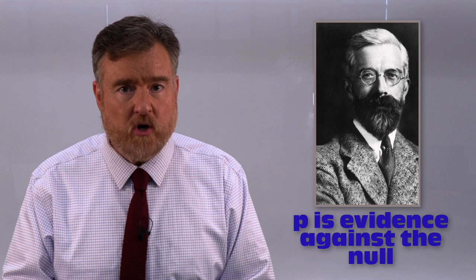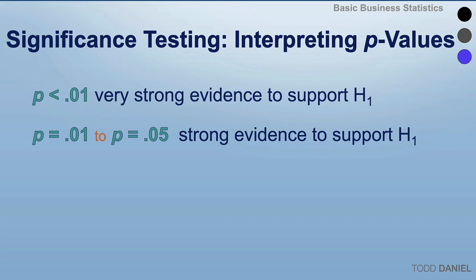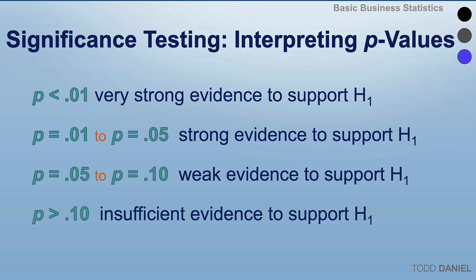Following the advice of Ronald Fisher, interpret p-values as levels of evidence against the null hypothesis. If the p-value is less than 0.01, that is very strong evidence against the null hypothesis. P-values between 0.01 and 0.05 are strong evidence to support the alternative hypothesis. P-values between 0.05 and 0.10 are weak evidence against the null hypothesis. And p-values greater than 0.10 are insufficient evidence, suggesting we should retain the null hypothesis.